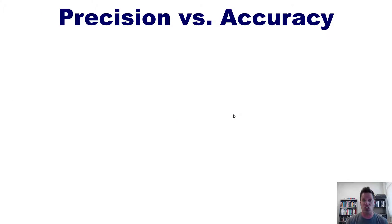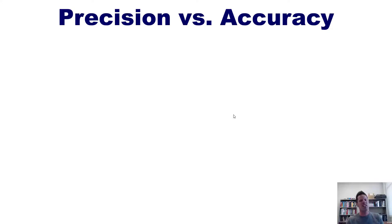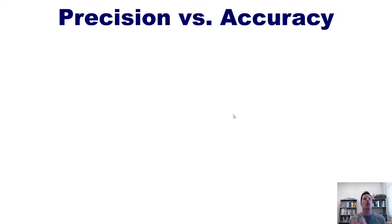Now we move on to the concept of precision versus accuracy. I know I'm inundating you with a lot of different concepts, but they form a fundamental foundational building block upon which we'll build the rest of the semester. What is the difference between precision versus accuracy? In everyday speech we sometimes use these two terms interchangeably, but in the world of science these two terms actually have very different definitions.